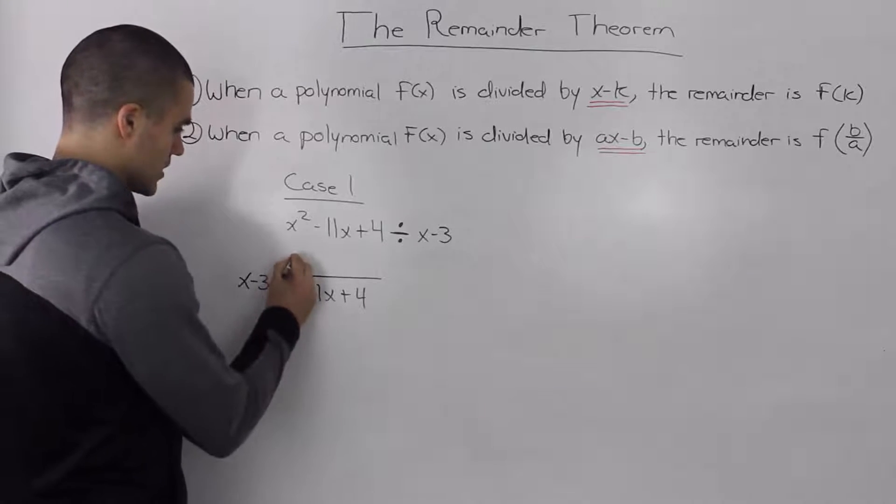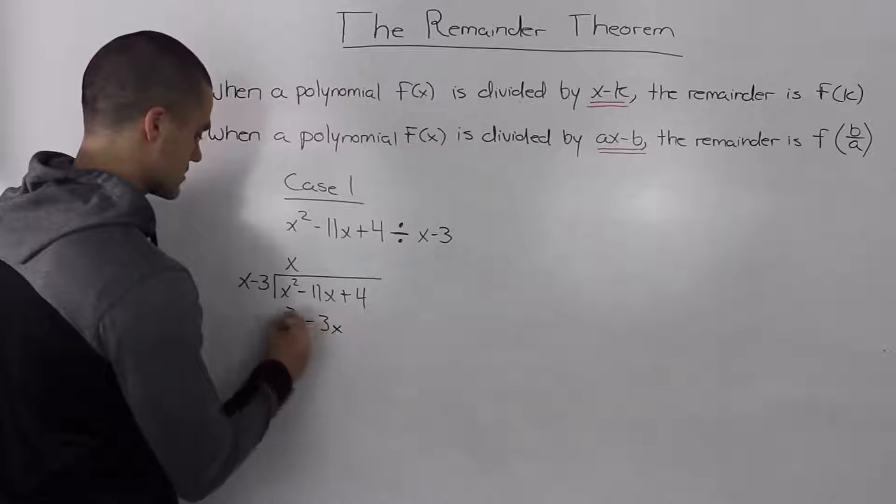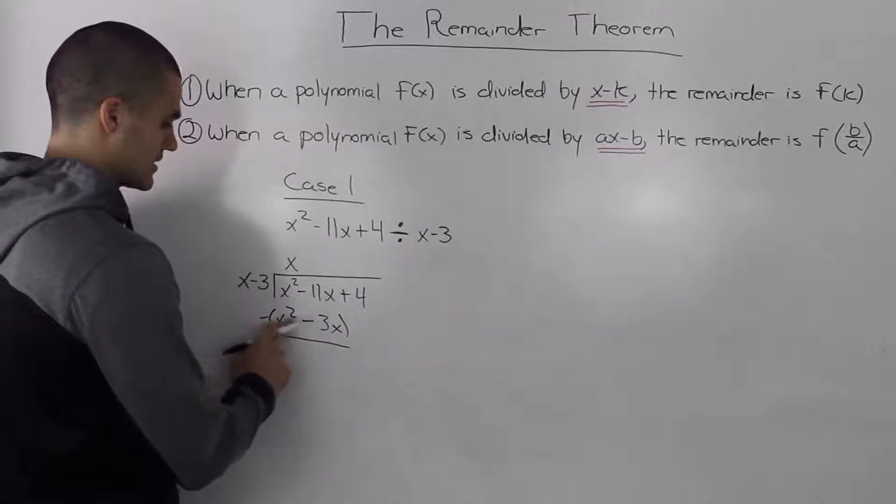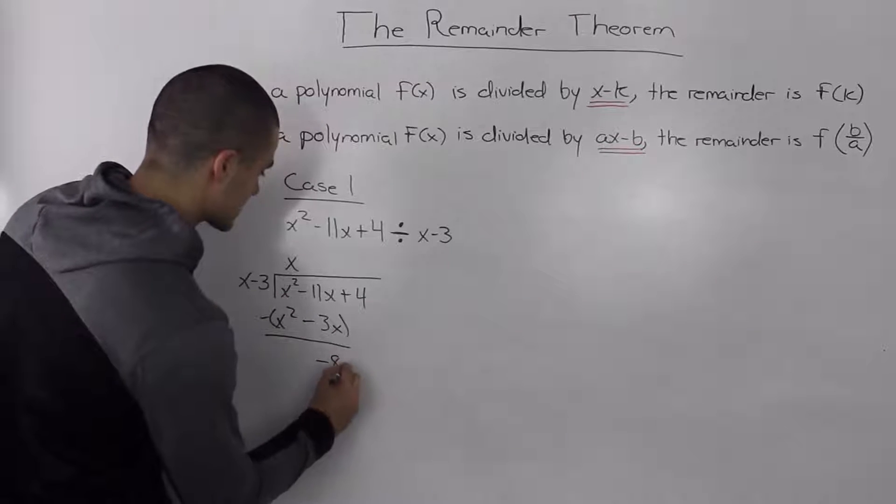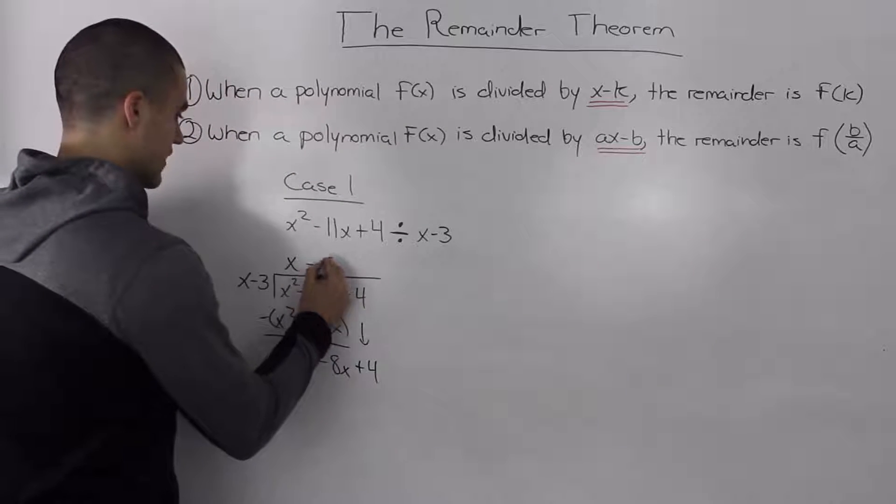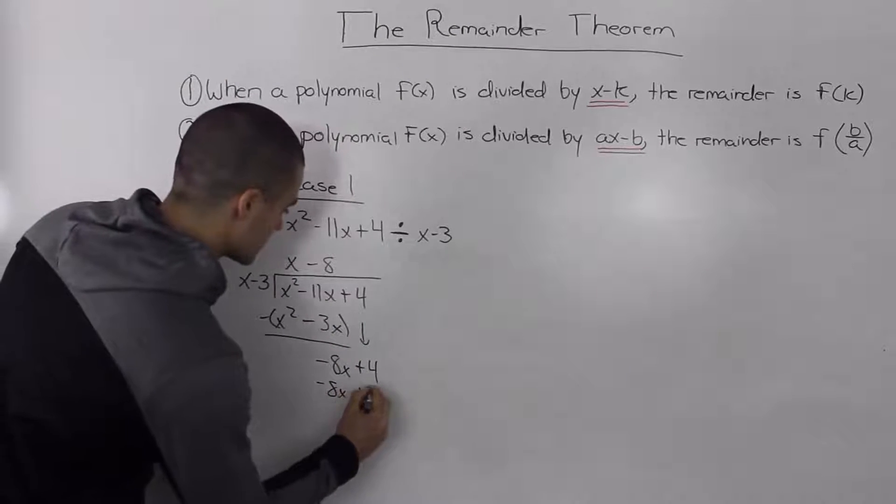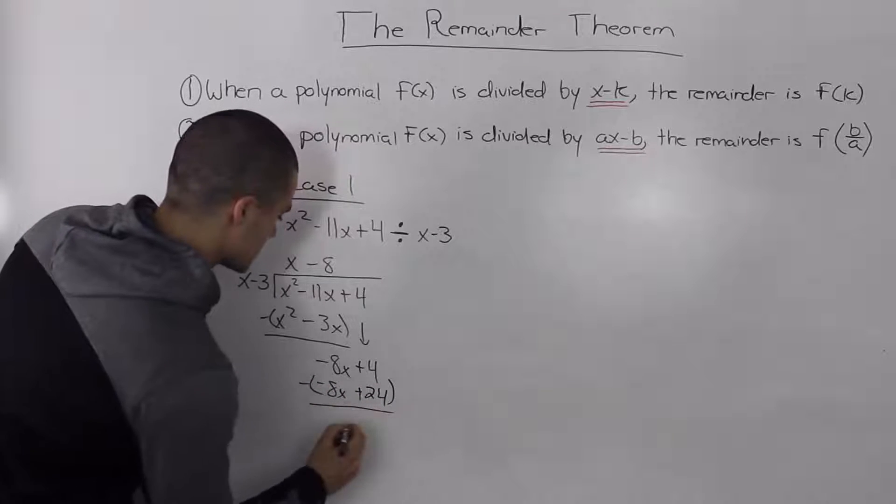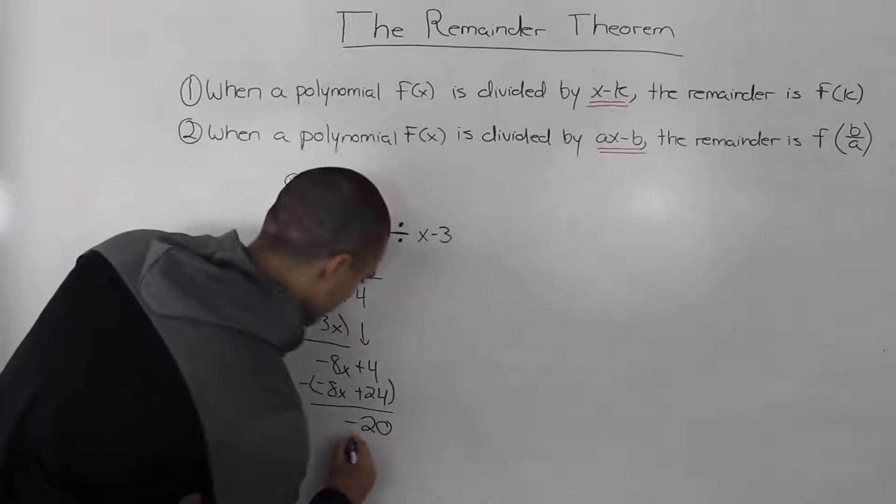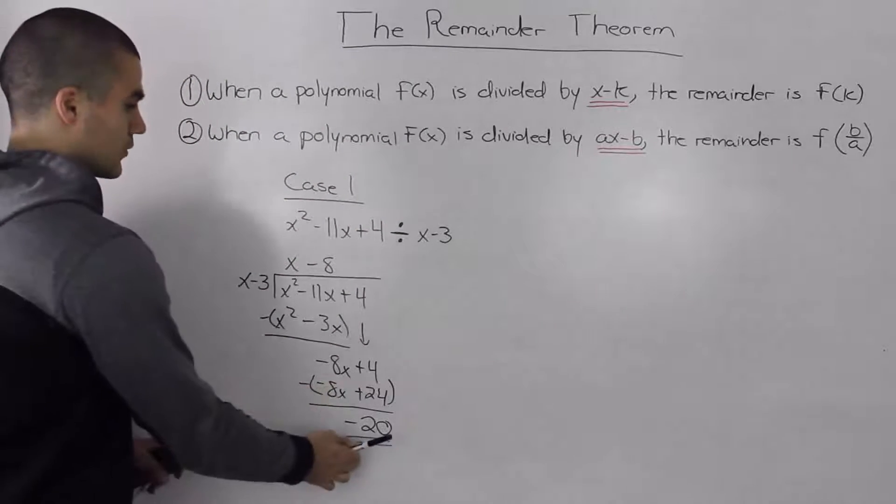How many times does x go into x squared? Well it goes x times, and then x times x is x squared, x times negative 3 is negative 3x. Now when we subtract these, the x squareds cancel out, negative 11x minus negative 3x, that ends up giving us negative 8x. Bring the 4 down, x goes into negative 8x, negative 8 times, negative 8 times 3 is positive 24. So when we subtract these, we end up getting a remainder of negative 20.